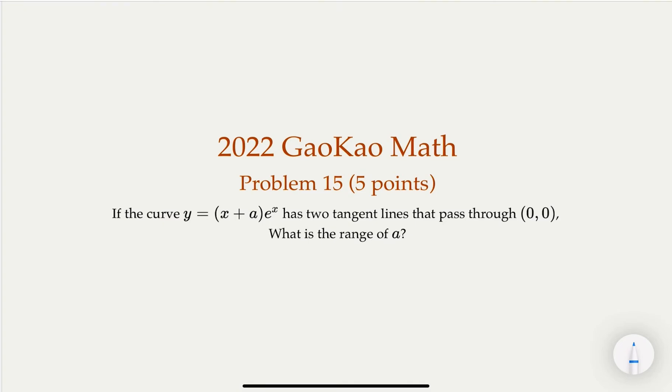We have 2022 Gaokao math problem, problem 15. This fill-in-the-blank problem is worth 5 points. The curve equation is y = (x + a)e^x, and it has two tangent lines that pass through the origin (0, 0). What is the range of value a? a is some constant we don't know, but in order to have two tangent lines that pass through this, let's figure out what is the range of a.